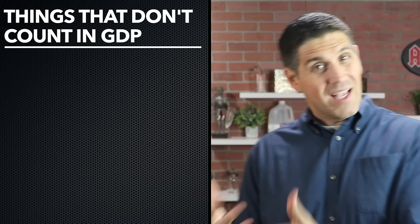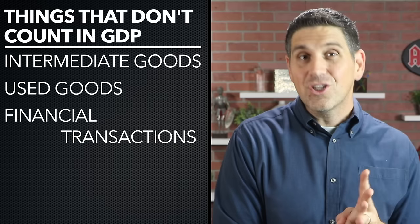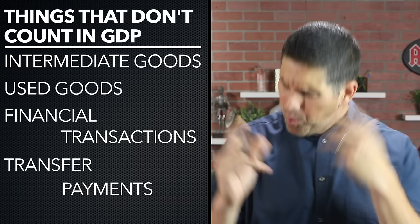Don't get bogged down by overly complicated details. Just make sure you understand what GDP is, the three ways to measure it, and what things count and don't count. Things that don't count include intermediate goods — things used to produce the final good. Used goods don't count because they were produced in previous years. Financial transactions don't count because nothing new is produced — buying stocks or bonds doesn't count. Government spending counts, but transfer payments don't count towards GDP. You'll need to do some practice to understand what counts and what doesn't.